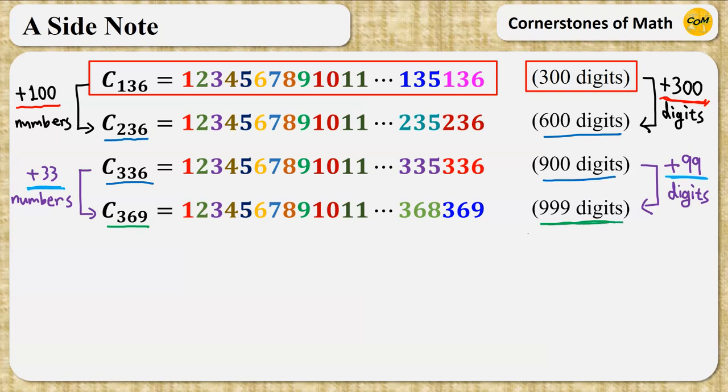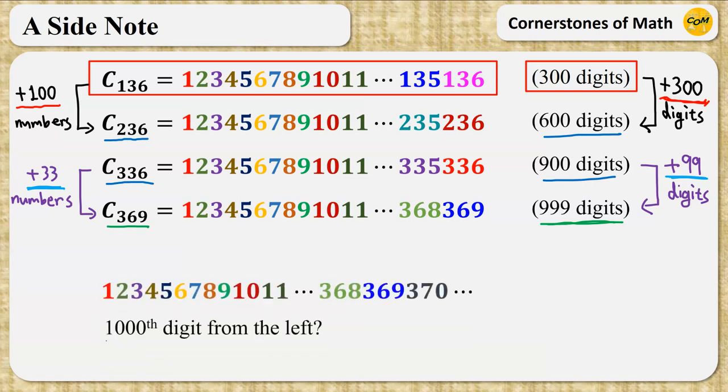And you can keep expanding and create more math problems if you want. For example, if we keep writing numbers, then you can ask what is the 1,000th digit from the left. Since this 9 from 369 is the 999th digit, the 1,000th digit is 3.